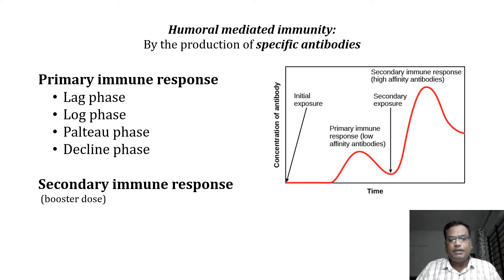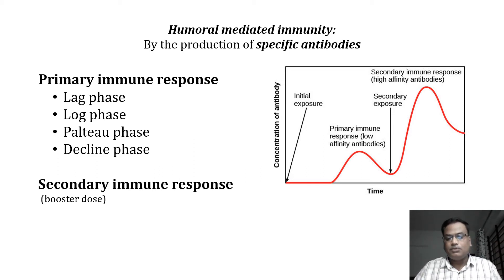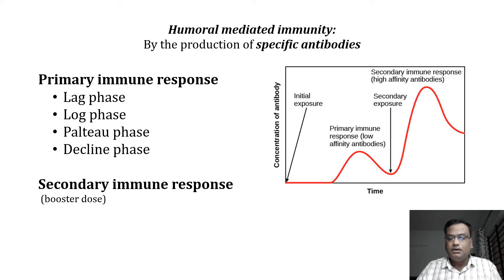Humoral mediated immunity works by production of specific antibodies. Let us understand primary immune response and secondary immune response. If a person is infected by a pathogen for the first time, the immune response will be slow because the pathogen must be identified, T helper cells activated, B cells activated, and antibodies produced. The person will suffer symptoms during this period. Once the immune response starts, the person gets cured. However, if the pathogen is very virulent, it may cause damage or death before the immune response is completed.